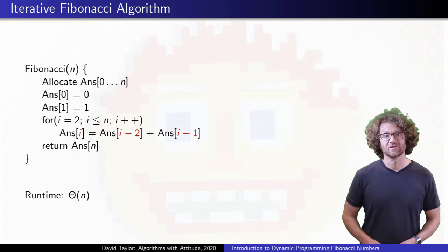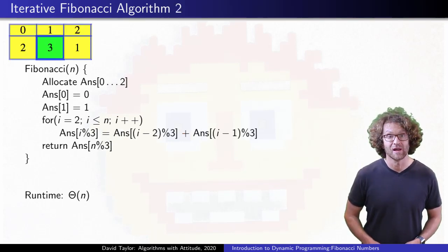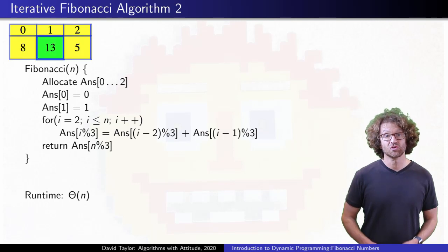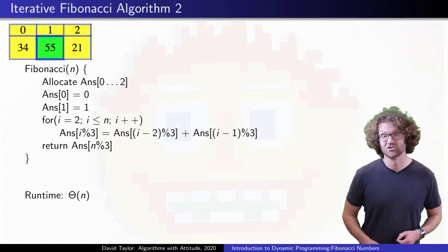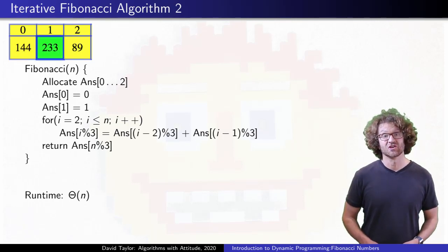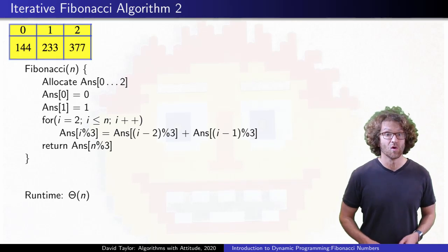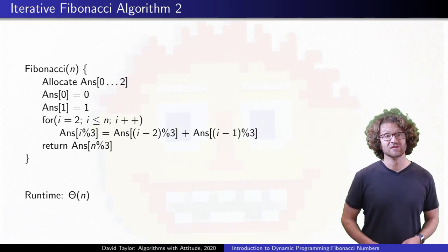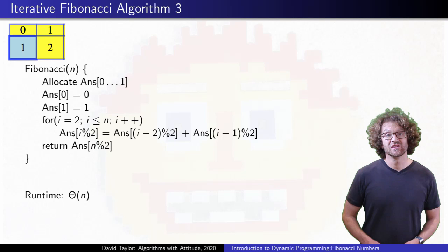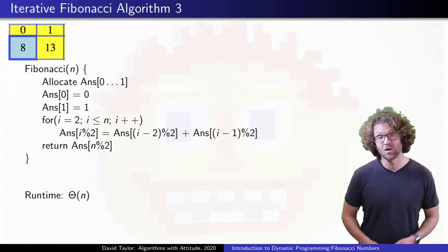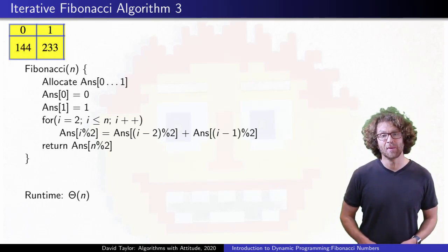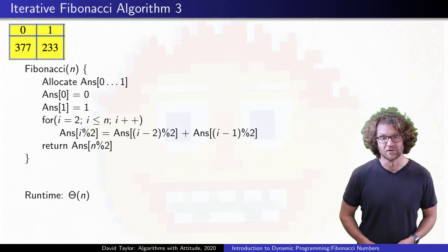So we could just store a table with three values, and calculate all of our answers like before, but use our indices modulus 3. Or if we want to just overwrite a value once we use it, just use indices mod 2. This lets us save a smaller table, so we only take constant space instead of linear space.